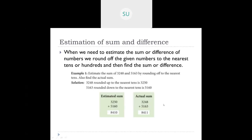Good morning students and welcome to today's maths class. In the previous class we studied estimation of sum and difference. When we need to estimate the sum or difference of numbers, we round off the given numbers to the nearest tens or hundreds, and then find the sum or difference. Whenever they tell you to find an estimation, you round off to whichever place they specify — tens, hundreds, or thousands — and then find the sum or difference.